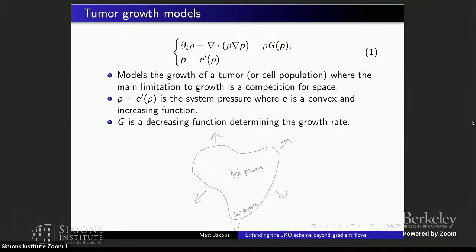The idea is these cells don't like competing for space. So if they're in some region where there isn't a lot of space left, they're going to grow really slowly. But if they're in a region where there's lots of space, they can grow faster. I have some collection of tumor cells, and at the center we have really high pressure, so it's growing really slowly, but along the edges it can grow faster. If I didn't have this source term, I would have a very nice W₂ gradient flow, but it's there and very important.